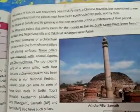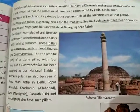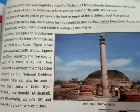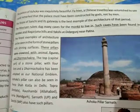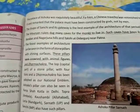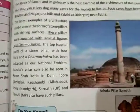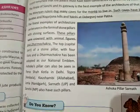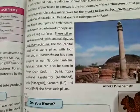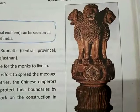The Mauryan rulers dug many caves for monks to live in — monks being those deeply devoted to Buddhism who give up everything for it. Such caves have been found in Barbara and Nagarjuna Hills. The finest examples of architecture can be seen in stone pillars with shining surfaces. These pillars were crowned with animal figures and the Dharma Chakra. The top of a stone pillar with four lions and a Dharma Chakra has been adopted as our national emblem.